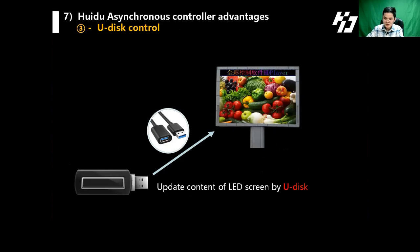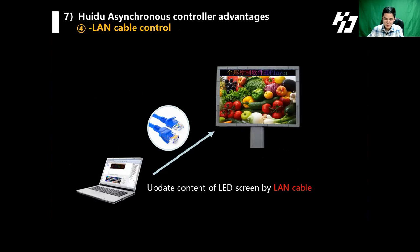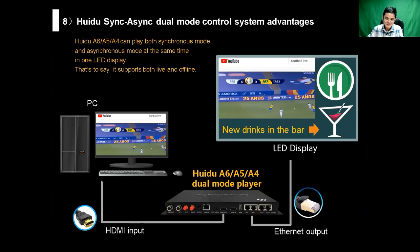We can also use a U-disc to update content on the LED display. And for synchronous, we can also use a LAN cable. The dual-mode controllers A6, A5, and A4 can play both synchronous and asynchronous at the same time on one LED display.